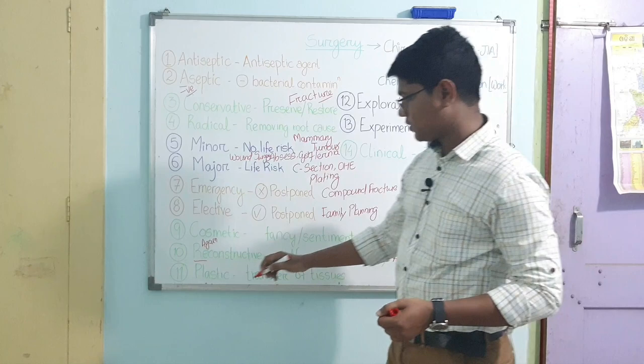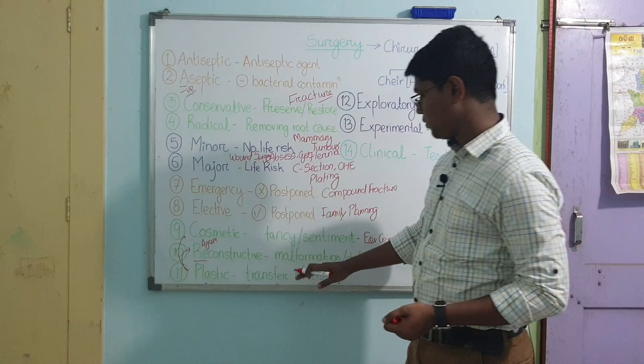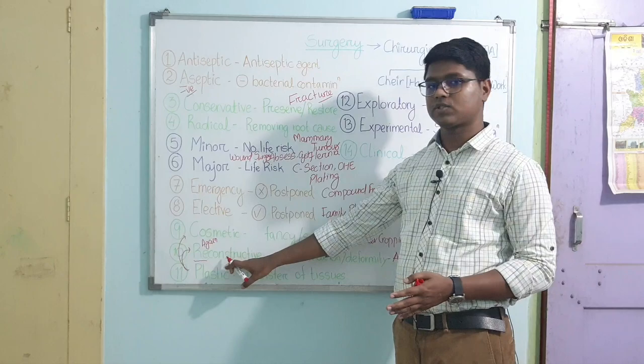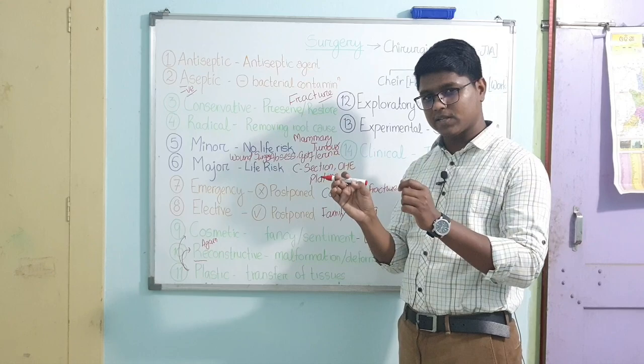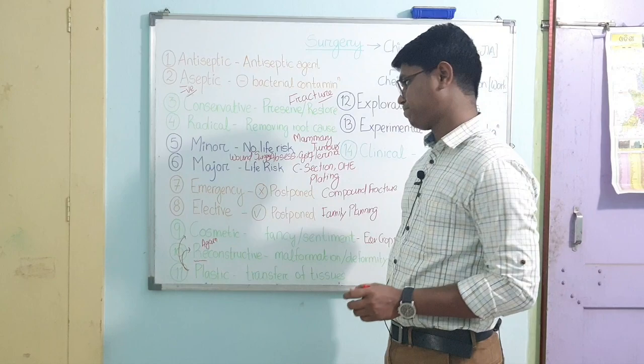Next is plastic surgery — in plastic surgery you transfer tissue from one part and correct a deformity on another part. Plastic surgery can be cosmetic or reconstructive depending on whether you are correcting a malformation by transfer of tissues, which makes it reconstructive plastic surgery, or if you are changing some appearance of the animal for cosmetic reasons, then it is cosmetic plastic surgery.